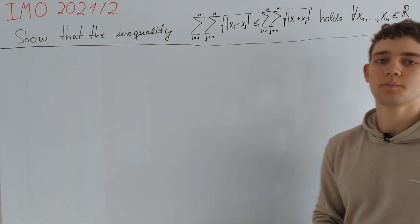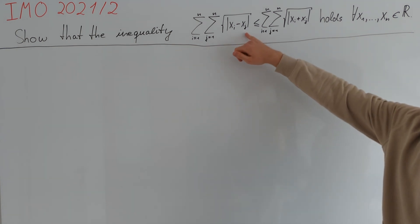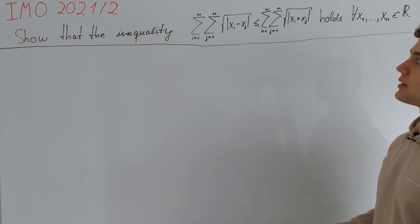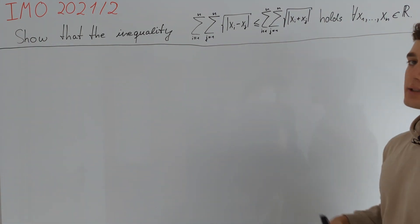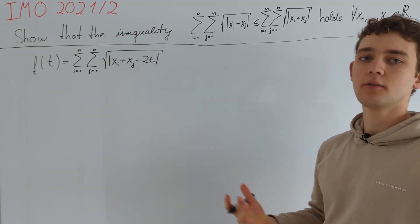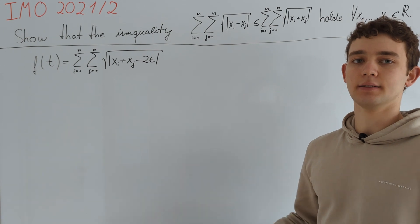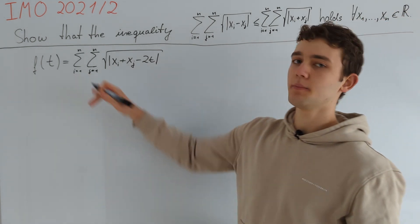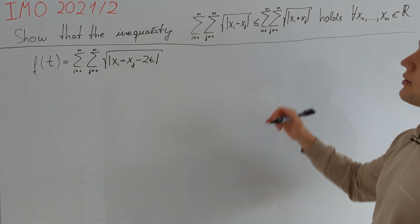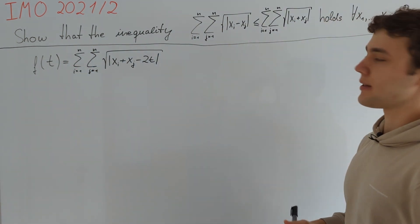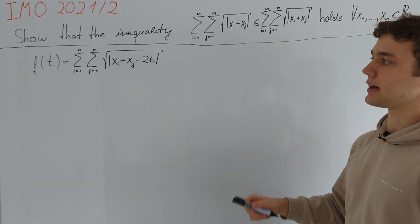An idea for solving this problem is that shifting all variables by some equal constant will not change the value of the left side. Therefore it is a good idea to investigate the behavior of the right side when shifting all variables by some constant. I define the function f(t) as the value of the right side of our inequality if we replace the variables xᵢ by xᵢ minus t. What we would like is to find the real number t such that f(t) becomes minimal, because then we can bound the right side from below by f of this particular t, and it would be enough to prove our inequality in this special case.